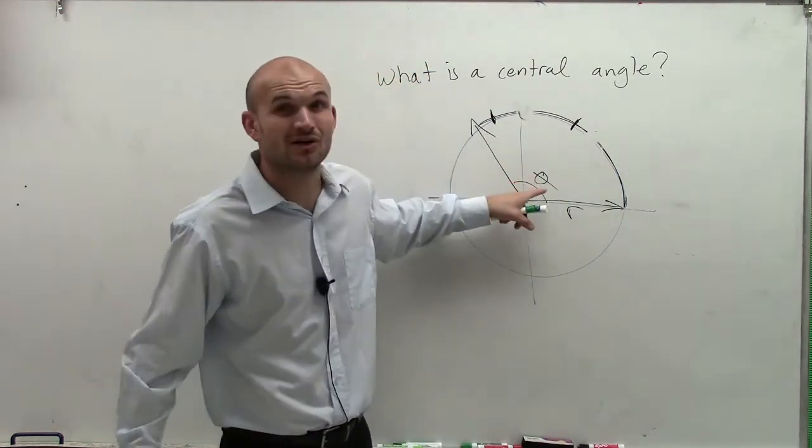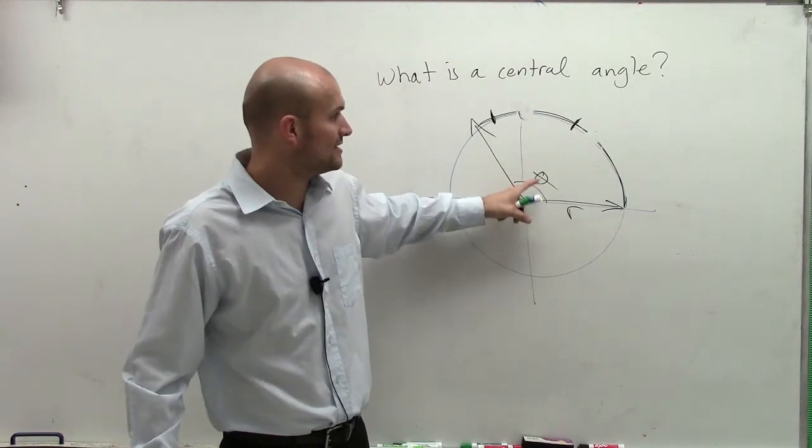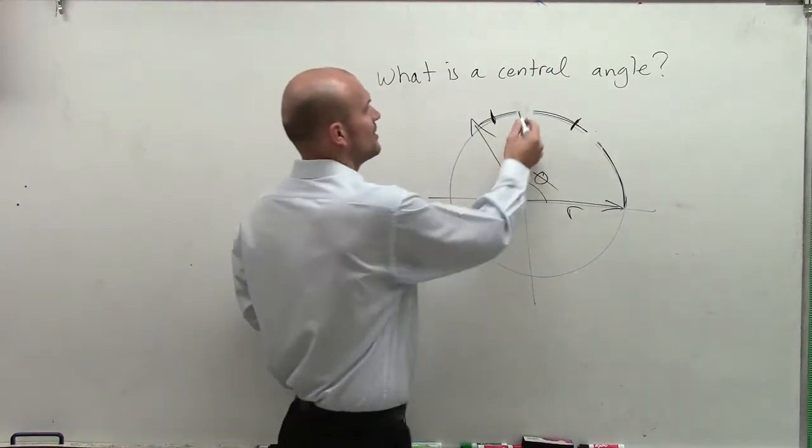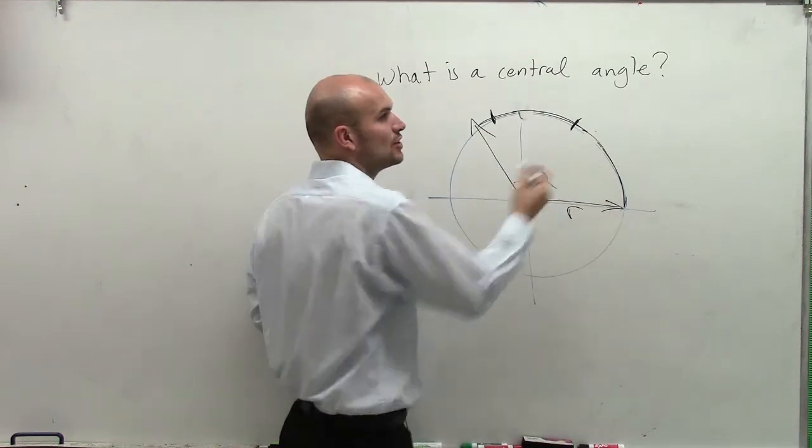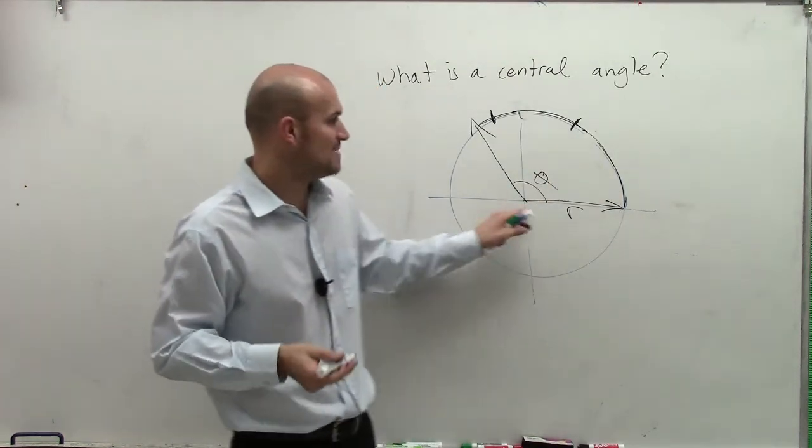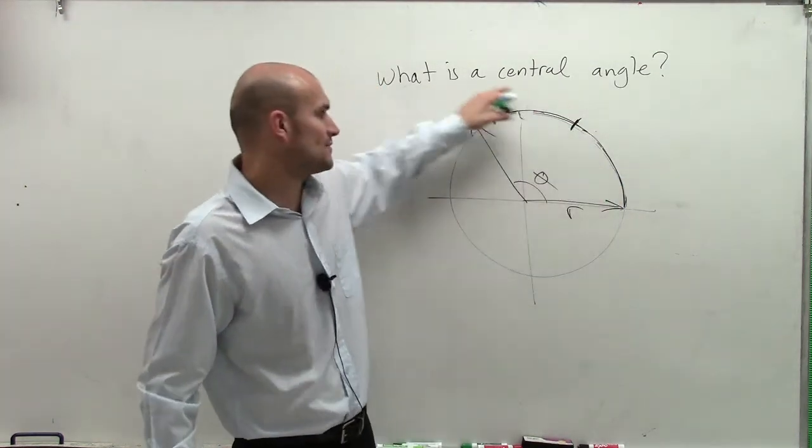So the distance of our central angle is going to be equivalent to our arc length in terms of radians, which is the measure of your radius wrapped around your circle.